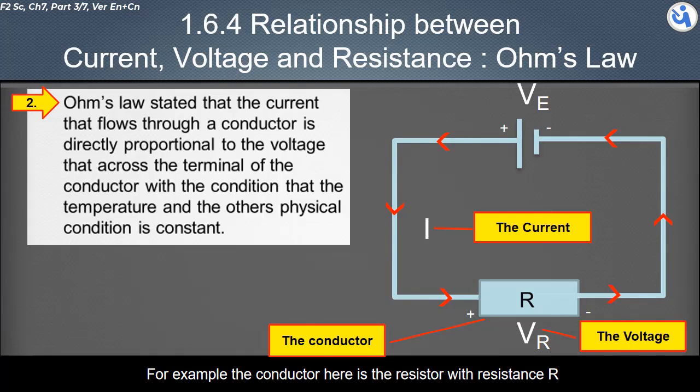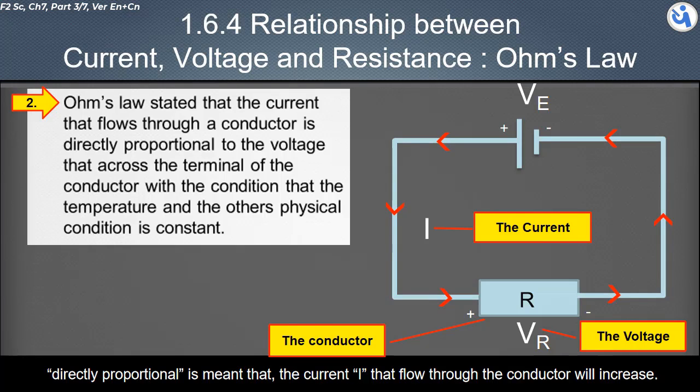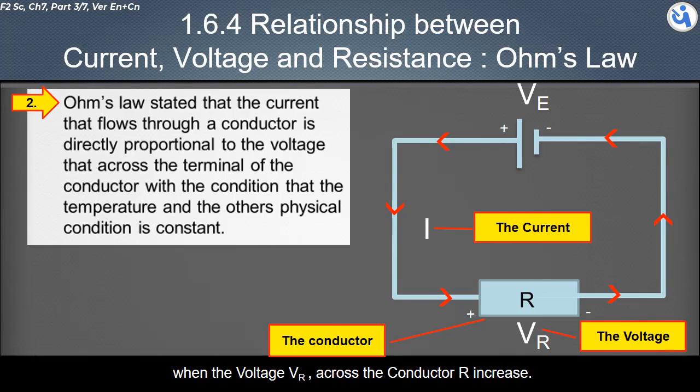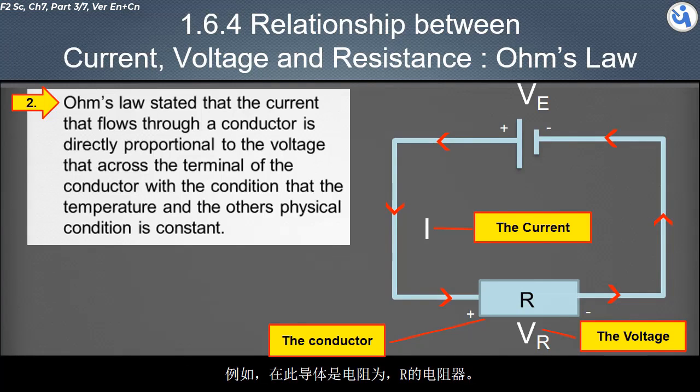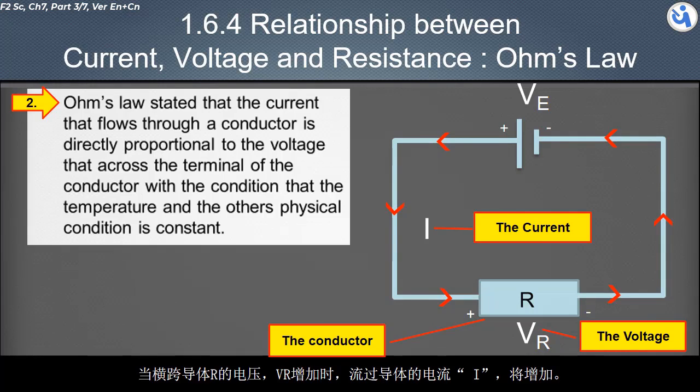For example, the conductor here is the resistor with resistance R. The key words about Ohm's law are current, voltage, and directly proportional. Directly proportional means that the current I that flows through the conductor will increase when the voltage VR across the conductor increases.